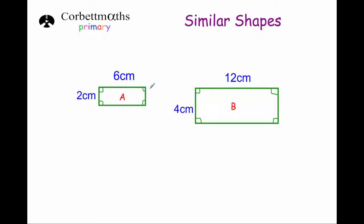Here we've got two shapes that are similar. What similar means in Maths is that one is an enlargement of the other, so rectangle B is an enlargement of rectangle A. That means that the sides have been maybe doubled or trebled — multiplied by two, or three, or some other number — and all the angles have stayed the same.